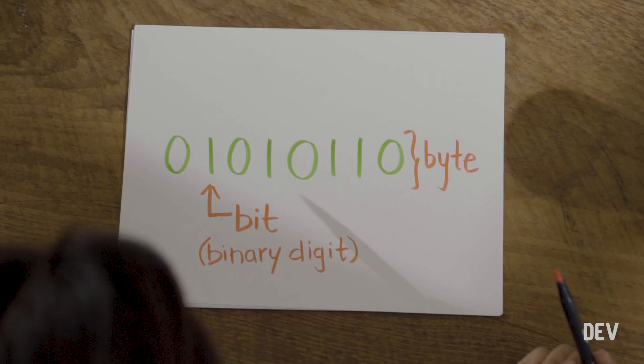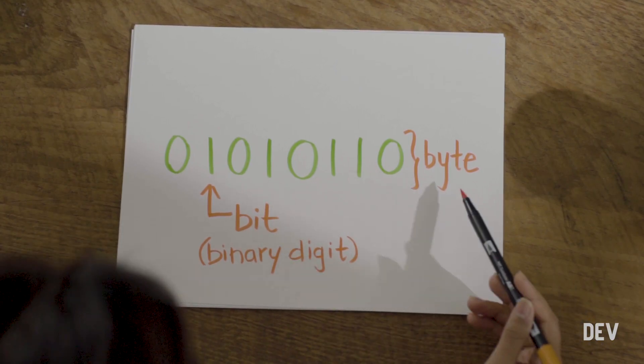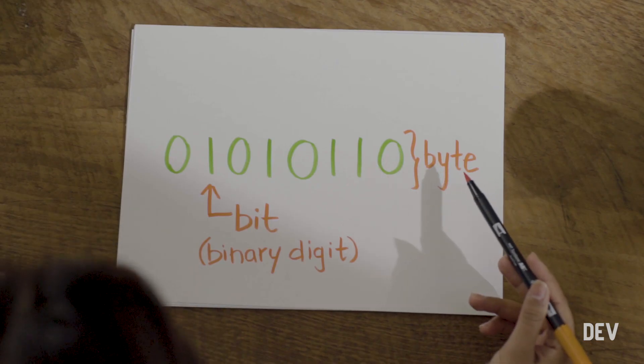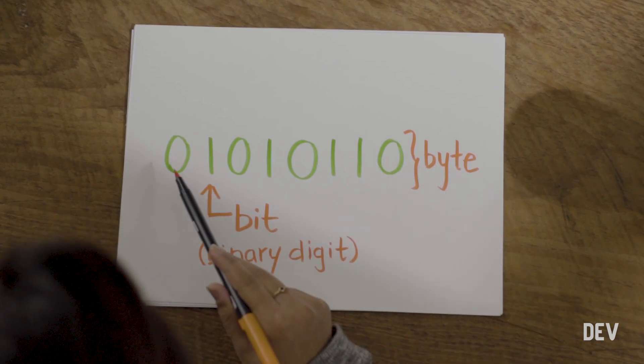Binary involves bits and bytes. In order to represent a single character, you usually need about one byte of information. One byte is also equivalent to eight consecutive bits. There must be a more compact, human-friendly version of representing a single character — something better than these zeros and ones. Well, it turns out there is, and that's where encoding schemes come in.